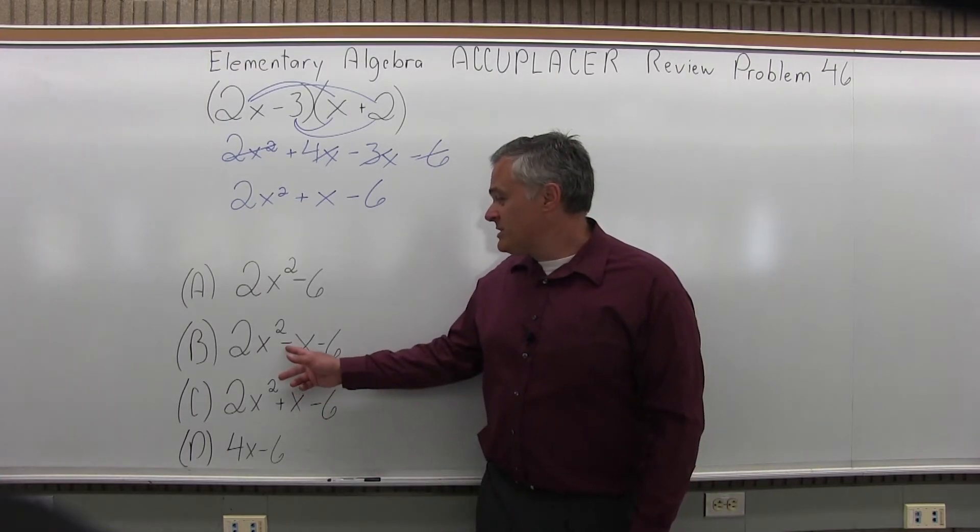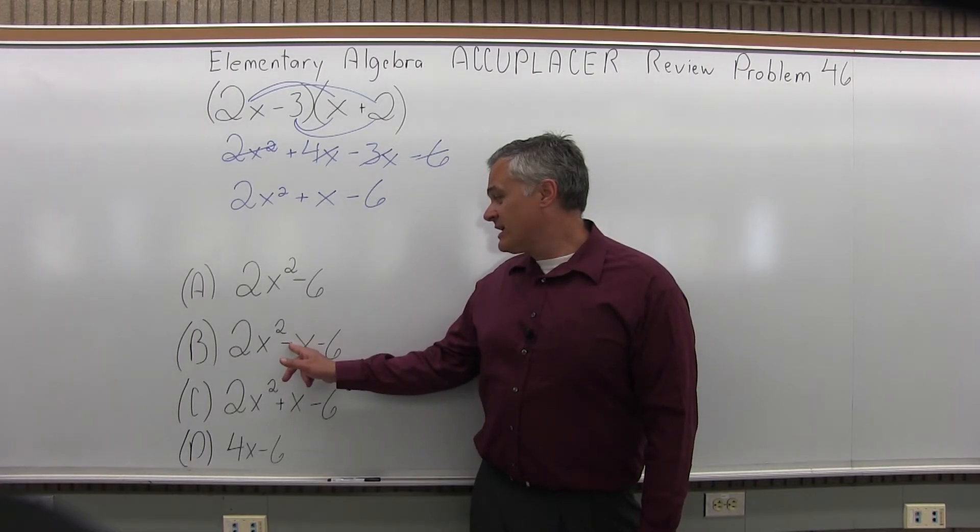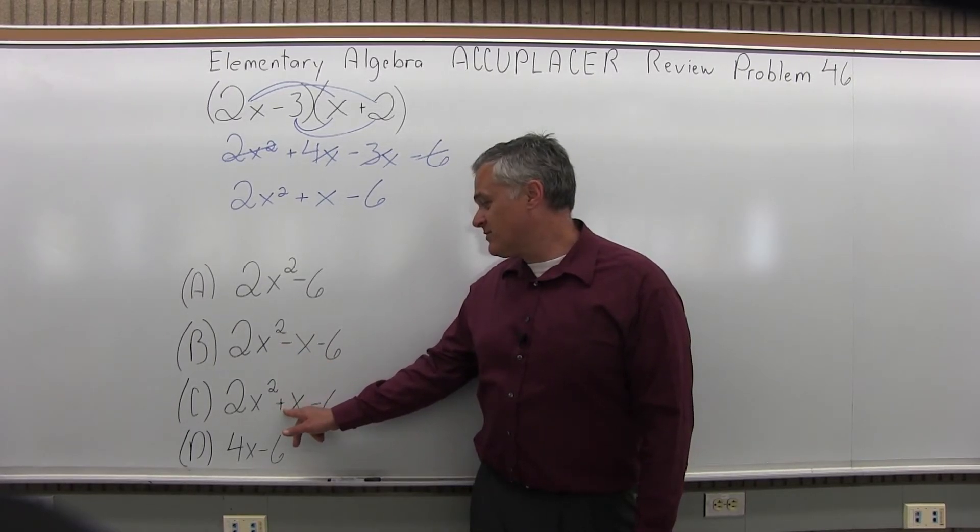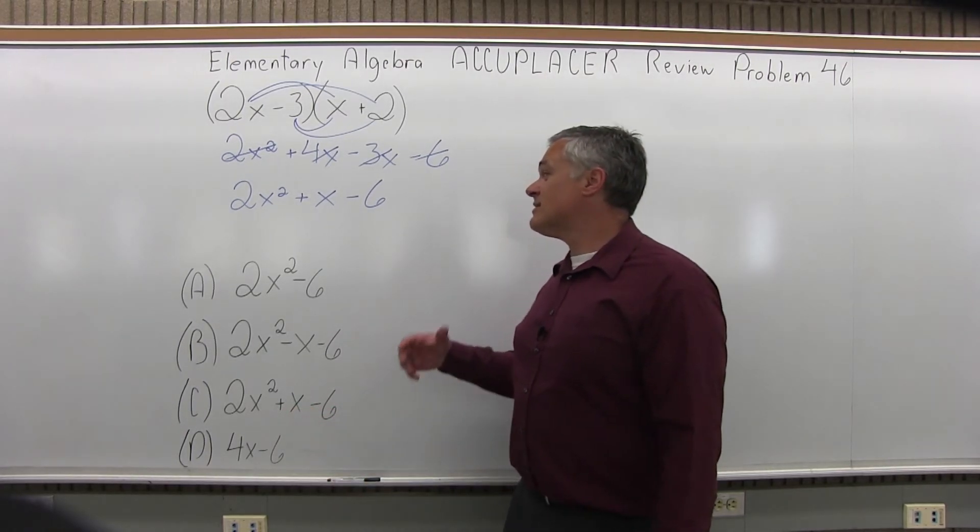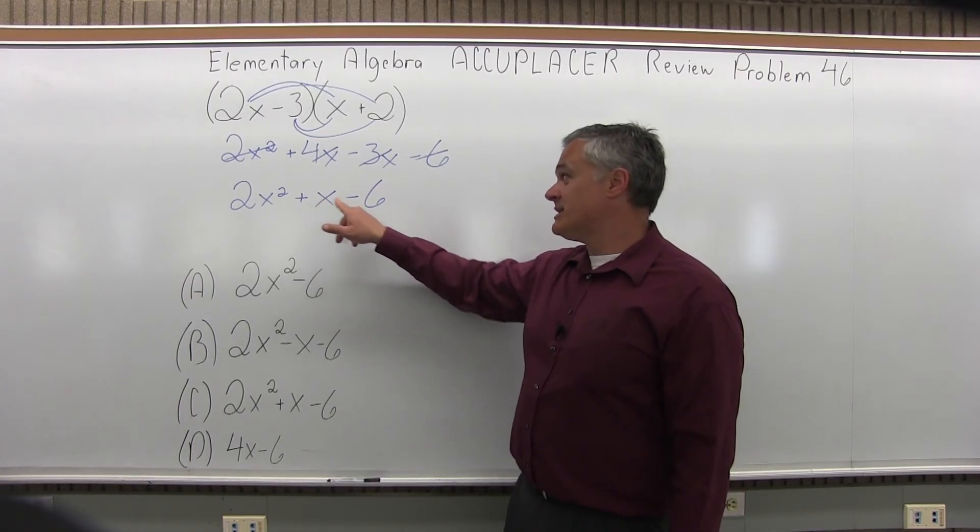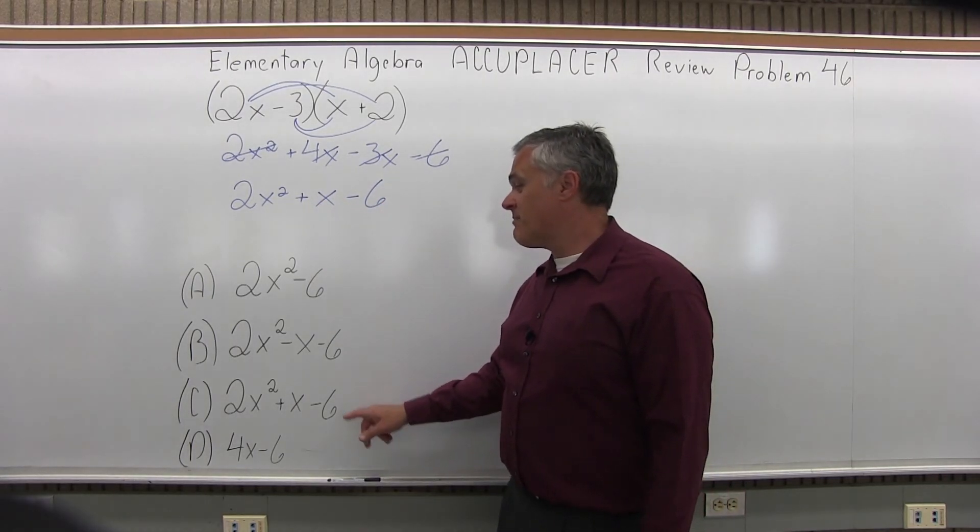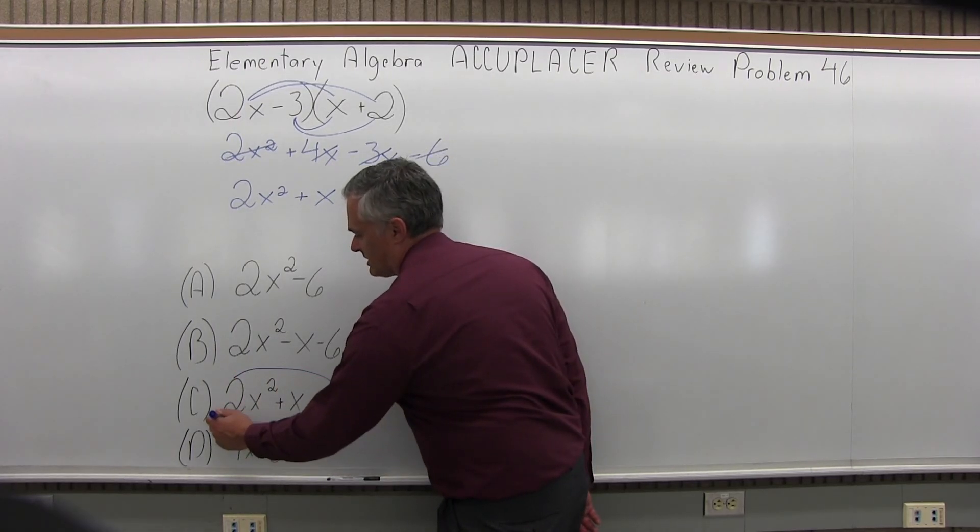And if I look through my list of options, careful now. Option B and option C are almost the same. The difference is a negative in front of the x in option B and a positive in front of the x in option C. So if we look at the answer that I got, 2x squared plus x minus 6 is a match for option C. So that's the answer for this problem, option C.